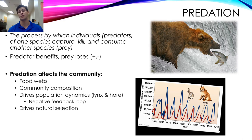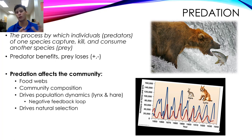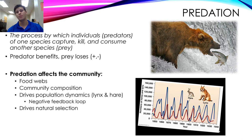Predation has a very significant effect on community composition and also drives population dynamics. There are patterns of boom and bust between predators and prey. A great example is the lynx and the snowshoe hare. Whenever the hare rises in population, there's a little lag, but the lynx population also rises. Once all of those hares have been consumed, there's steep competition for resources, and the lynx population goes back down.